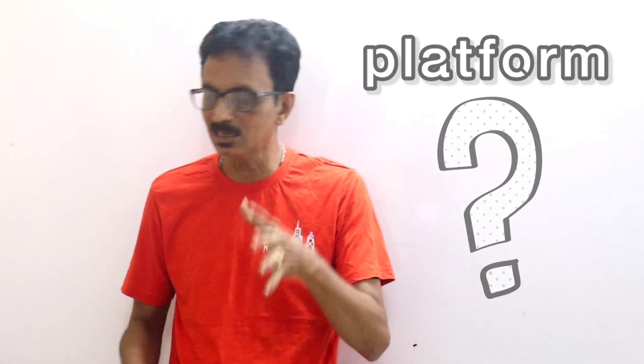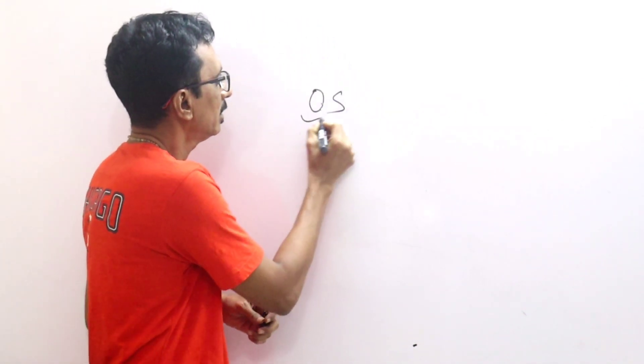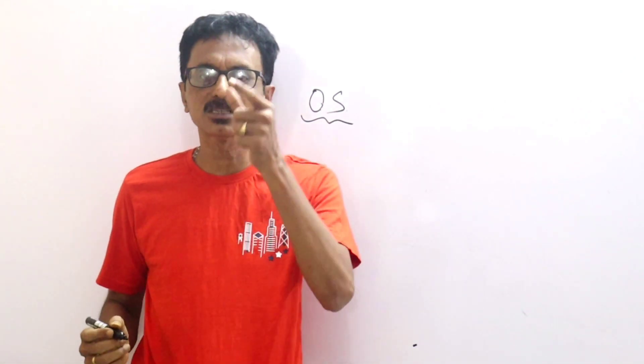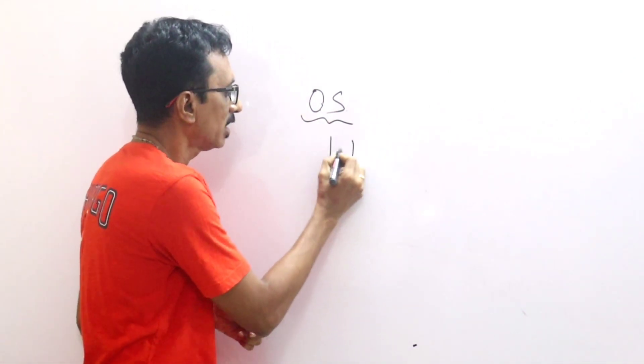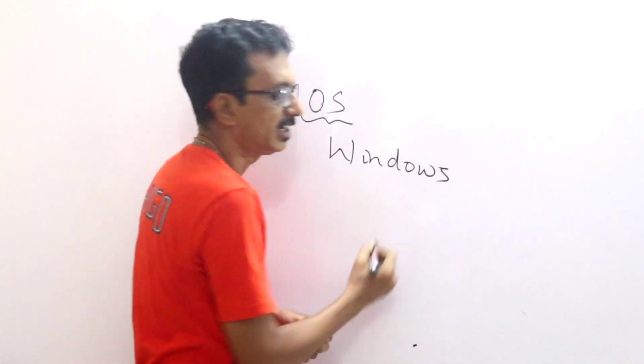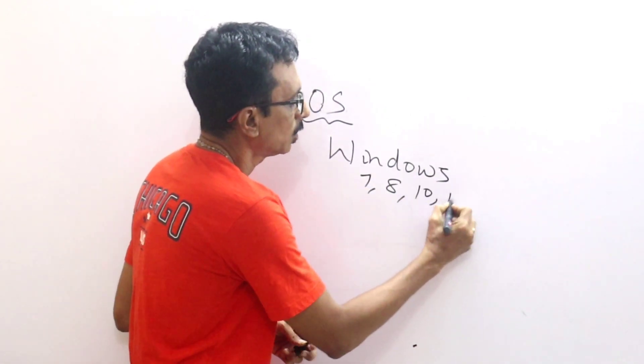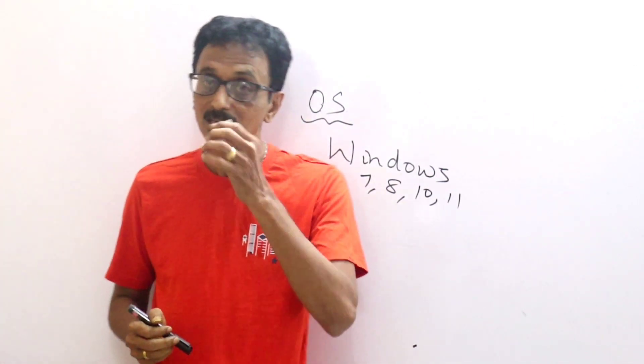So this is the advantage of platform independent. Actually, platform is the main thing. You can use the operating system — for example, if you use the operating system in the lab, you can use it the maximum amount of time. Windows 8, 7, 10, 11 — this is the main thing.